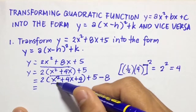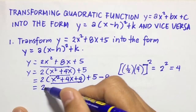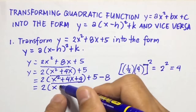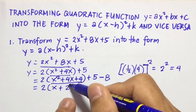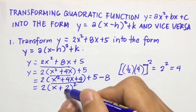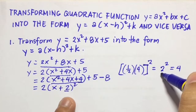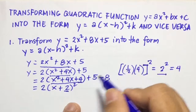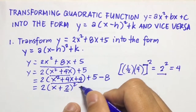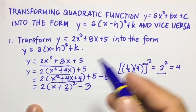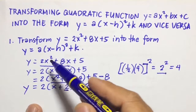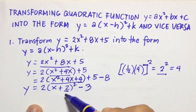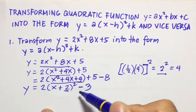So 8 is the number we subtract from the constant 5, so we have 5 minus 2 times 4 is 8. Then expressing this as a square of a binomial, we're going to have 2 times the quantity of x plus 2 squared. The number we squared was 2, so we have plus 2. Then 5 minus 8 is negative 3. So your answer is y equals 2 times the quantity of x plus 2 squared minus 3.